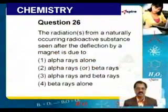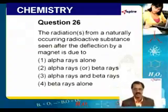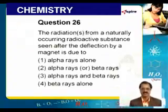In this problem, you are asked to find out what are the radiations that are emitted from a naturally occurring radioactive substance. Any naturally occurring radioactive substance can emit alpha rays, it can emit beta rays, it can emit gamma rays, and so on and so forth.